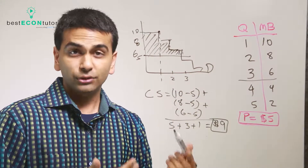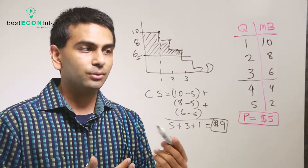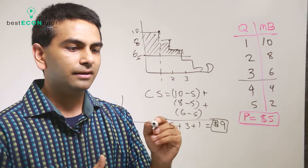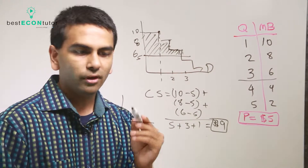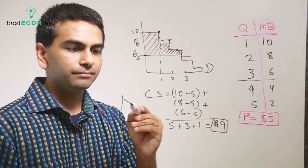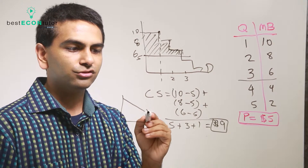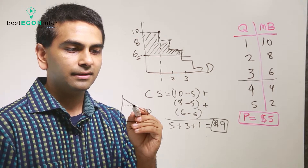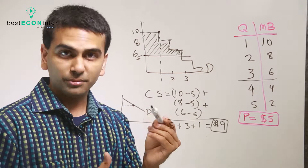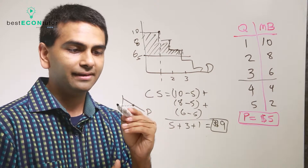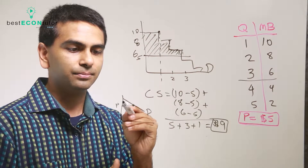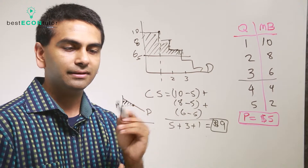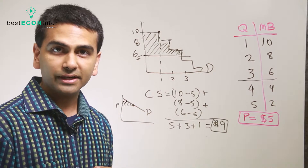Usually what we end up doing is using a more straight demand curve. That's why, as we'll see in a moment, the consumer surplus — one way to estimate it, if this is the price — is simply that triangular area under the demand curve and above the price line.